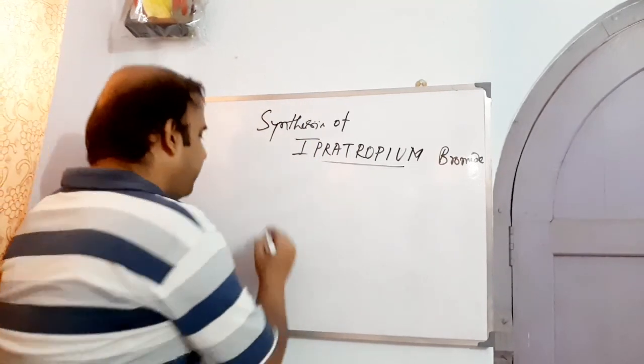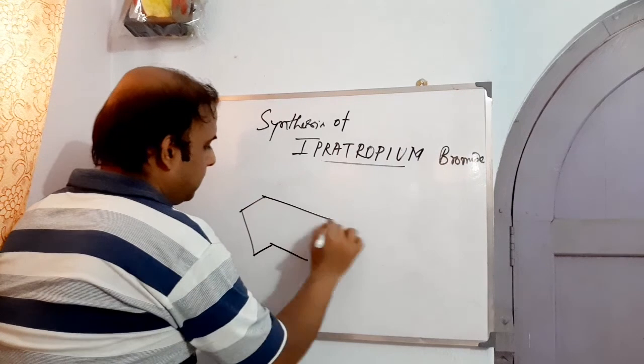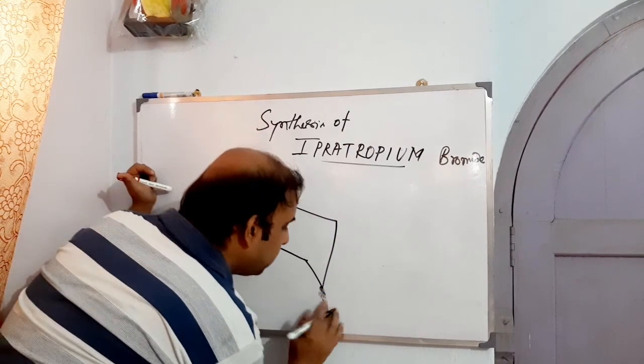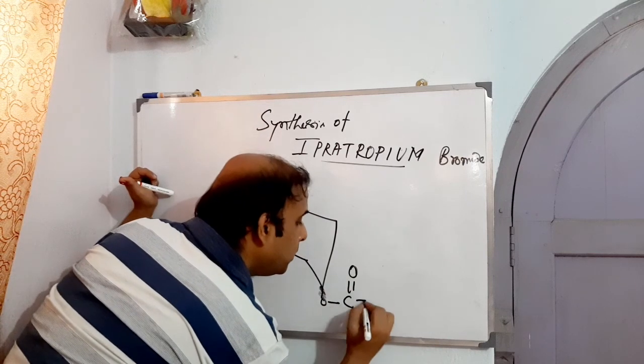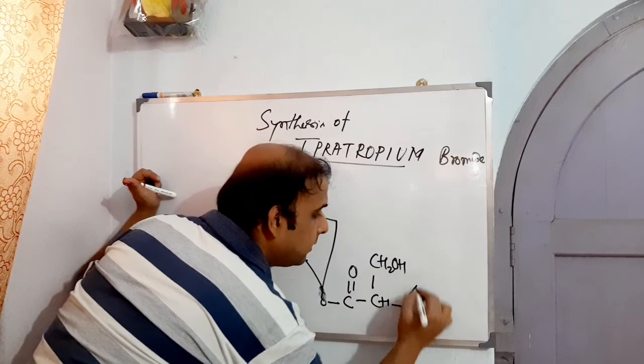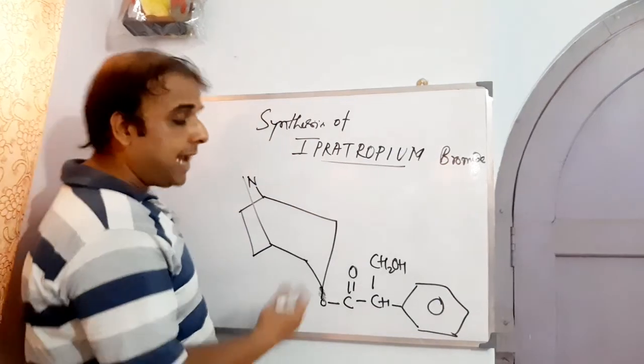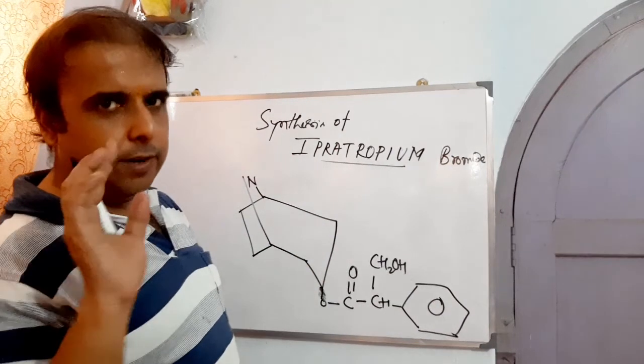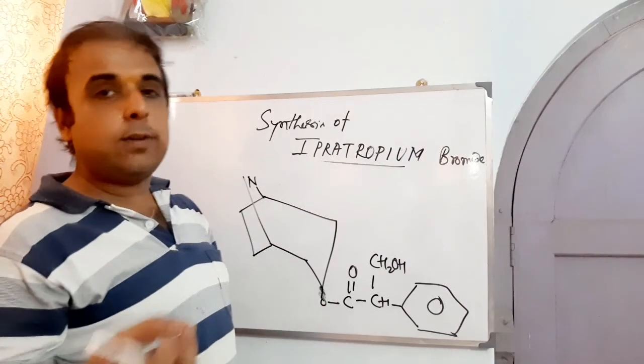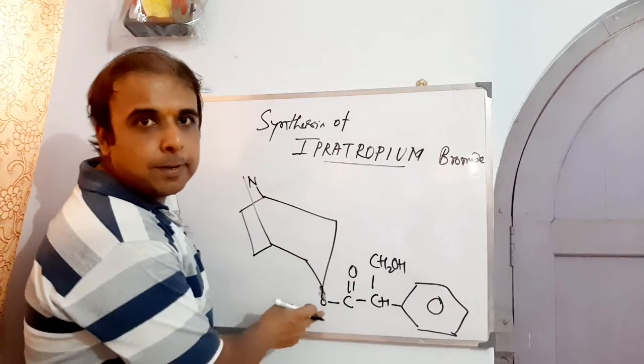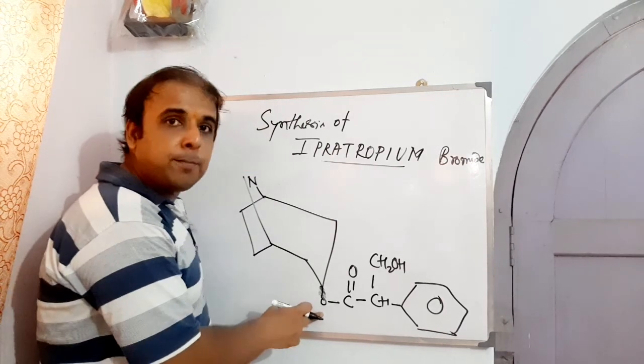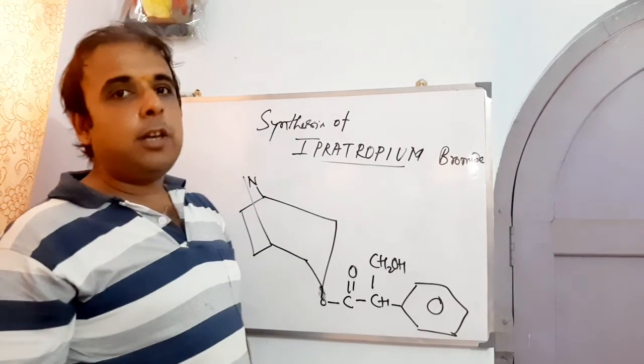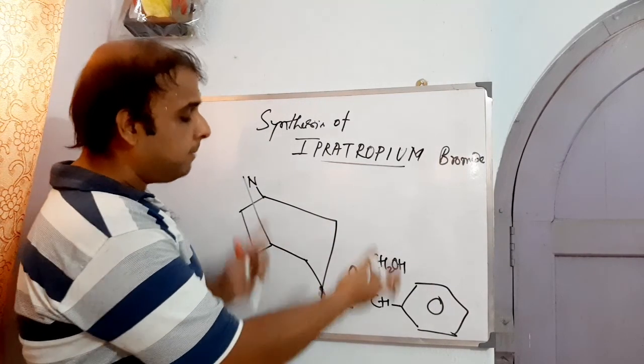Atropine looks something like this. We have O, then C double bond O, then CH, then CH2OH, then a phenyl. That is the part of tropic acid. It is the tropic acid and tropine. Tropine includes the hydroxyl at this particular position because after all it is the hydroxyl of tropine that reacts with the OH of tropic acid. And finally on removal of a single molecule of water, merging took place.